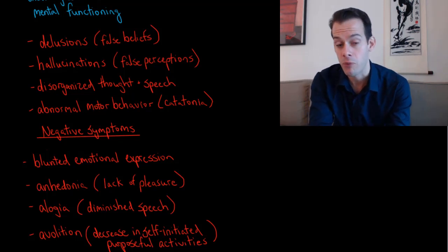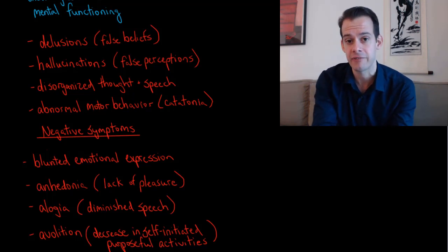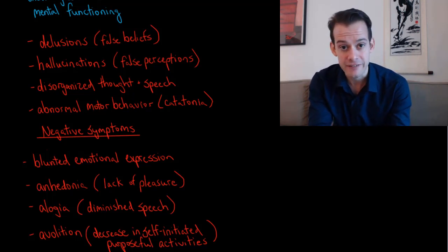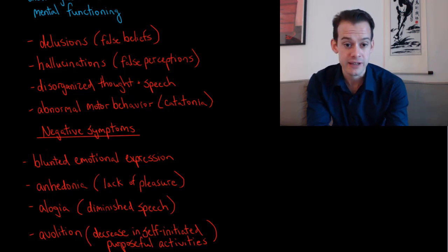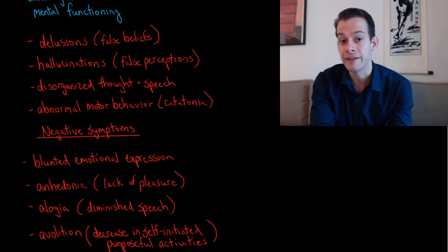Lastly we have abnormal motor behaviors which often come in what's called catatonia. There's a separate listing in the DSM-5 with different types of catatonia. Generally we see abnormal motor behaviors, often in the form of reductions in motor behavior.